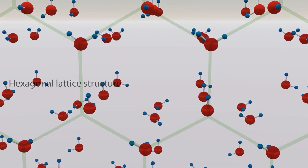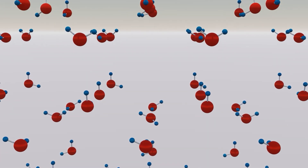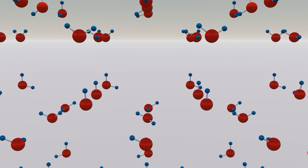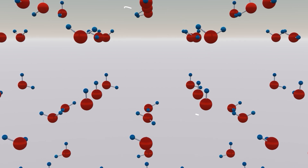These hydrogen bonds are more stable and longer lasting compared to the liquid phase. The structure forms naturally because it allows for the most efficient and stable bonding network, minimizing overall energy while maximizing the number of hydrogen bonds.